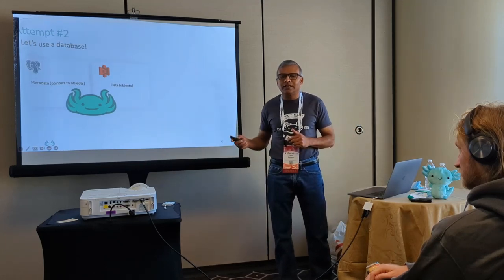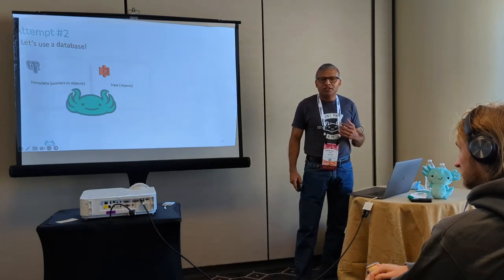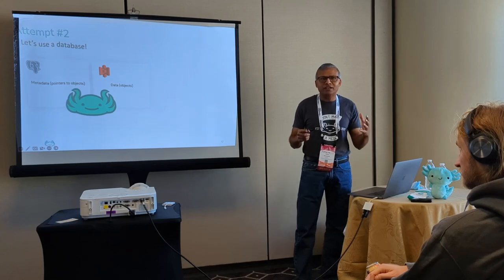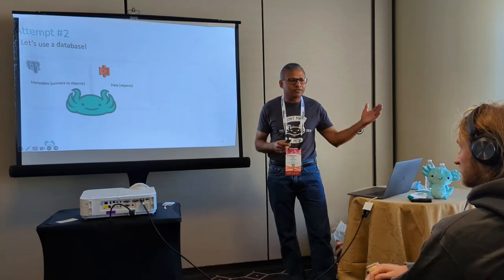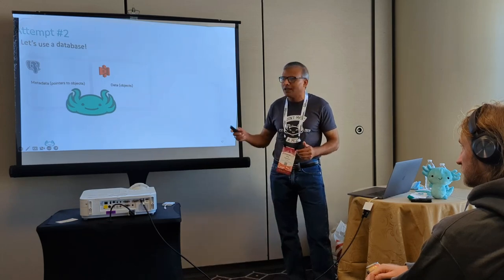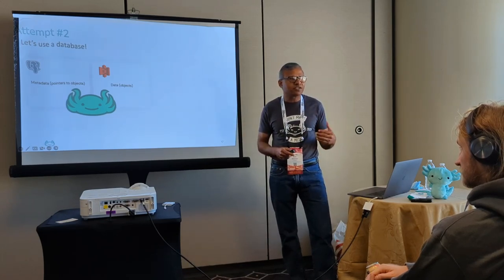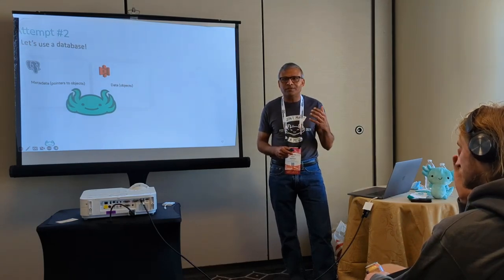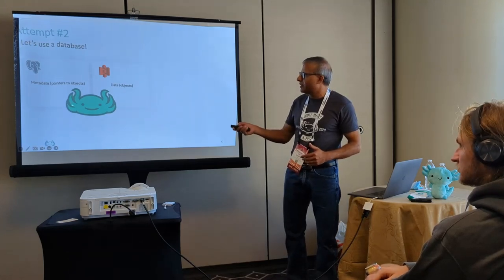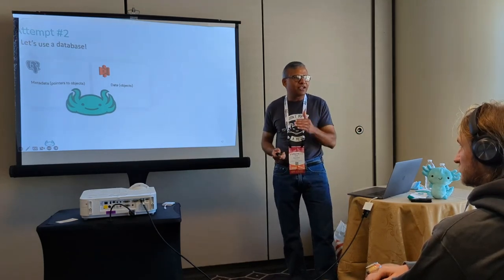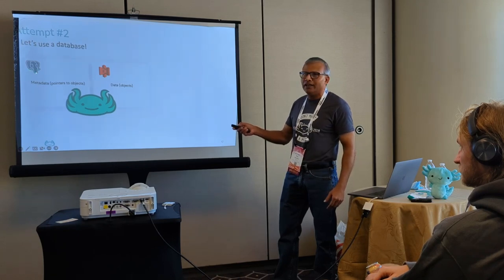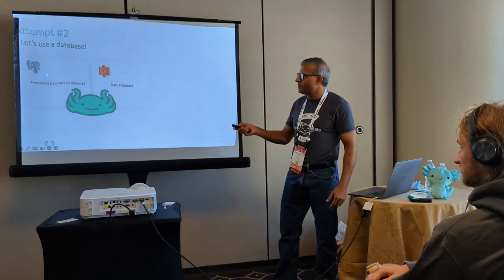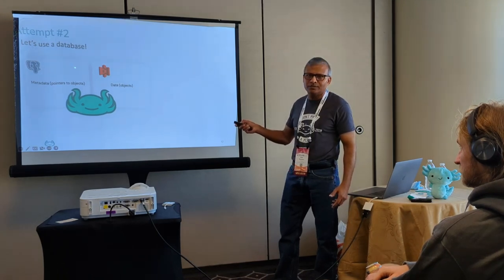For the next attempt, we thought about the data objects — mostly you're making fast lookups or scanning lots of objects. So maybe a database would be a good option. Instead of storing pointers to objects in Git, why not store them in a database? Because databases are good for quick scanning and quick lookups. So we tried putting all the metadata pointers to objects in Postgres, where we store these pointers and the objects remain in S3.